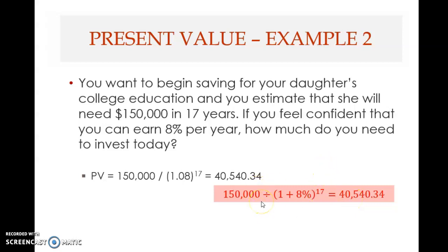What does that tell you? It tells you that you need to have this much money now — the present value — so that you can invest this amount now for 17 years at 8% interest in order to get $150,000 at the end of 17 years, which can be used for paying for the doctor and college education. So that is the answer.